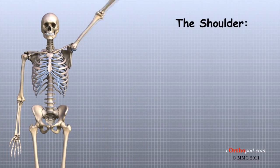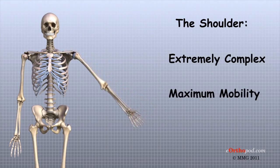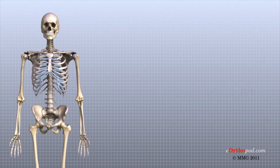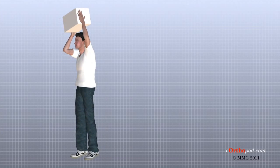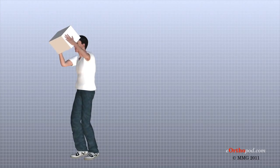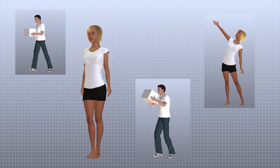As you can see, the shoulder is extremely complex with a design that provides maximum mobility and range of motion. Besides big lifting jobs, the shoulder joint is also responsible for getting the hand in the right position for any function. When you realize all the different ways and positions we use our hands every day, it is easy to understand how hard daily life can be when the shoulder isn't working well.